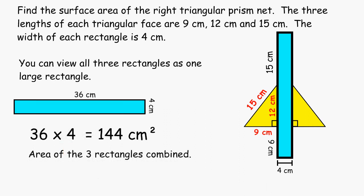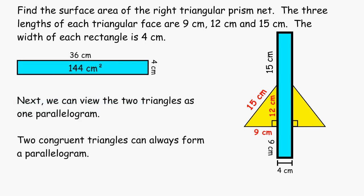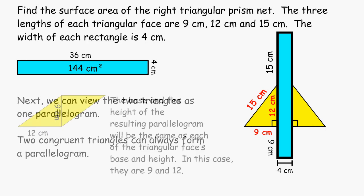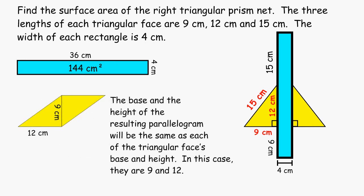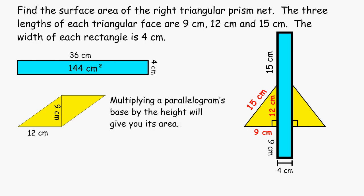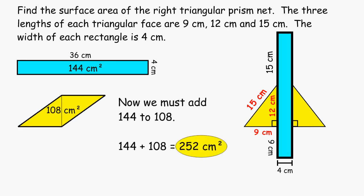Now we have to figure out the combined area of the two triangles. With the first strategy we formed a rectangle, but this time we are going to form a parallelogram. Any two congruent triangles will always form a parallelogram. To find the area of a parallelogram, we multiply its base by its height. The base and the height of the parallelogram are 12 and 9, producing an area of 108 square centimeters. If we add the combined area of all the rectangles, which is 144, and the combined area of both triangles, which is 108, we would come up with a total of 252 square centimeters.